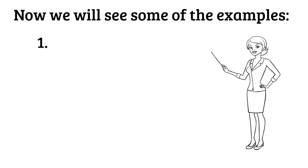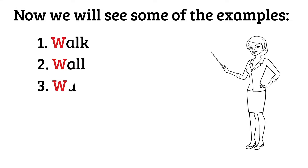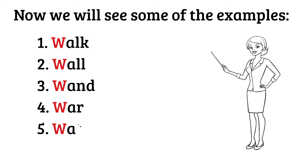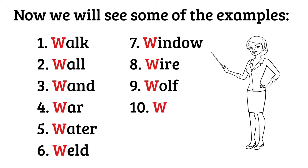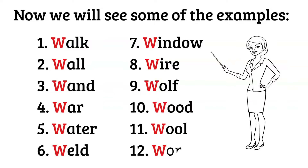W says w as in walk. W says w as in wall. W says w as in wand. W says w as in war. W says w as in water. W says w as in weld. W says w as in window. W says w as in wire. W says w as in wolf. W says w as in wood. W says w as in wool. W says w as in worm.